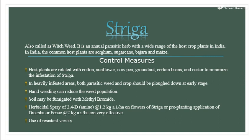The second parasitic weed is Striga. It is also called as witch weed. It is an annual parasitic herb with a wide range of host crop plants in India. In India, the common host plants are sorghum, sugarcane, bajra, and maize.